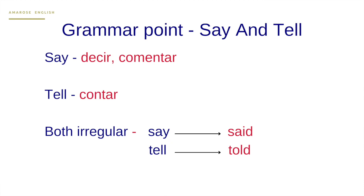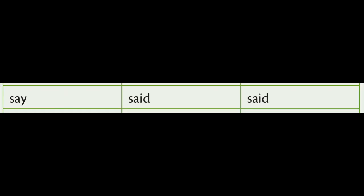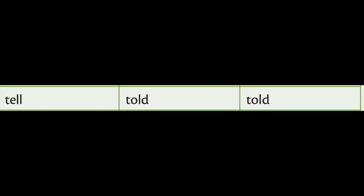If we are looking at the three columns of the verbs, it would be: say, said, said — and tell, told, told. It's the same for the simple past and also for the past participle.